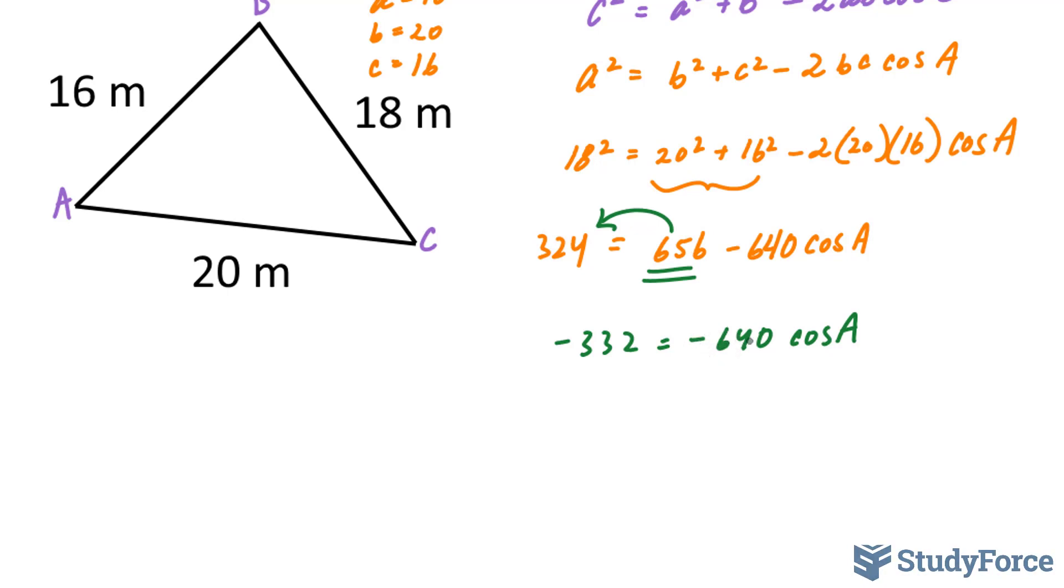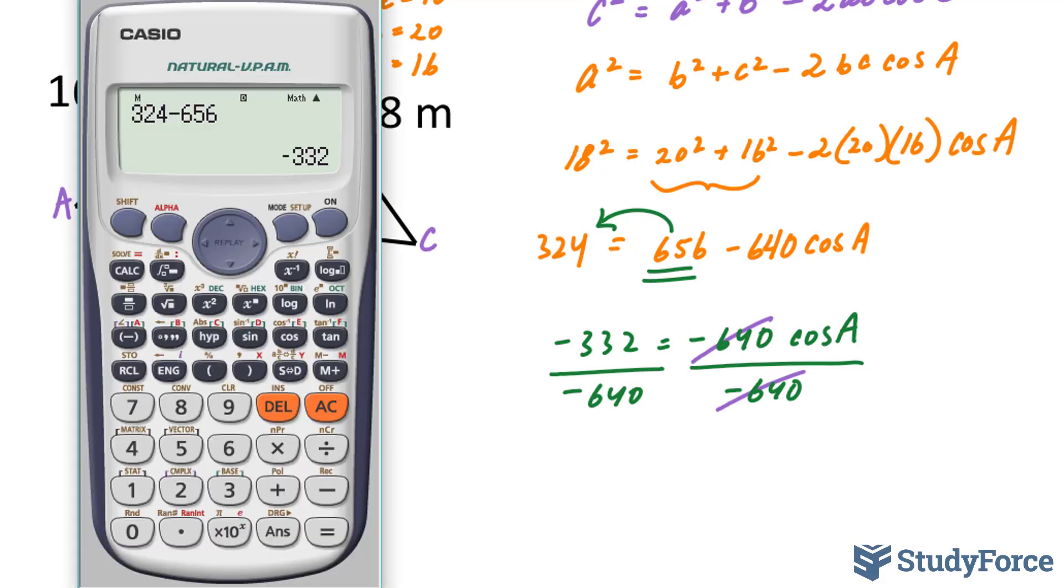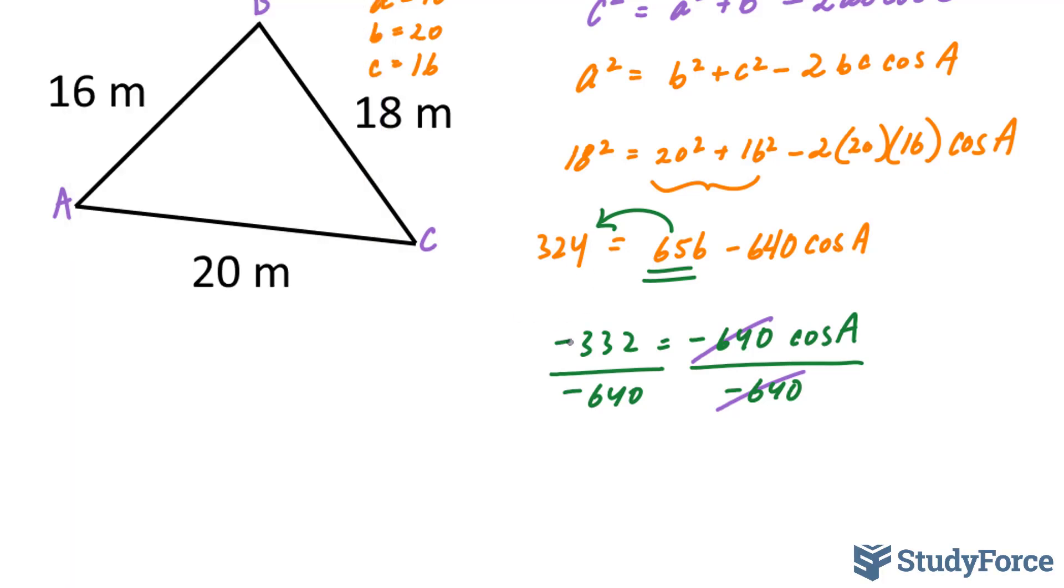Next, we'll divide both sides by -640. Watch what happens. This 640 and this one cancels out. And on the left side, you're left with 332 over 640. But just to be safe, what I'll do is cancel out these negatives before I do anything else.